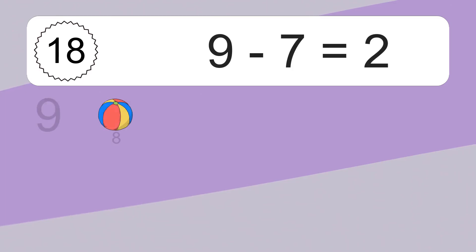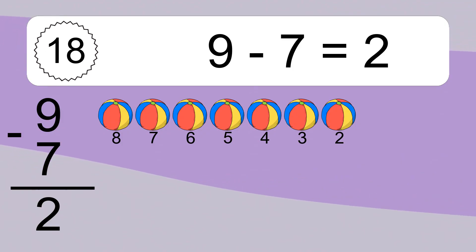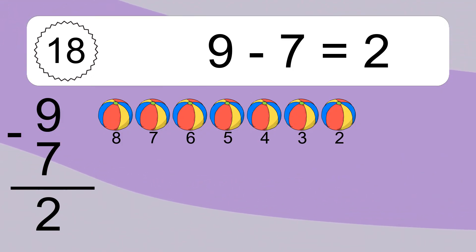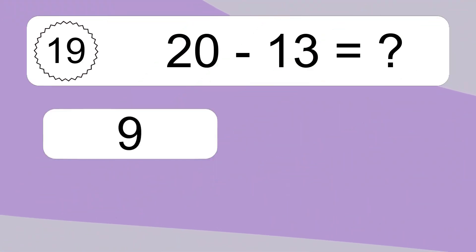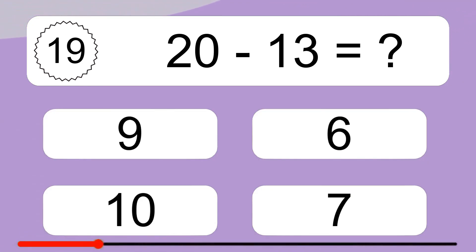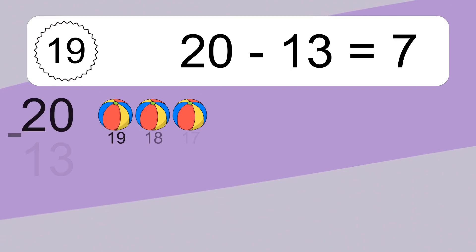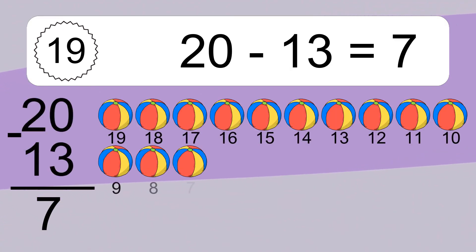9 minus 7 equals what? 20 minus 13 equals what? 20 minus 13 equals 7.